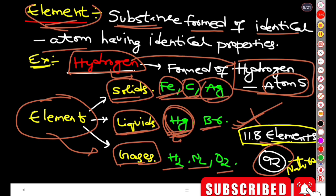There are 92 naturally occurring elements which can be isolated naturally. Remaining elements are synthetic elements, which are prepared in the laboratory.